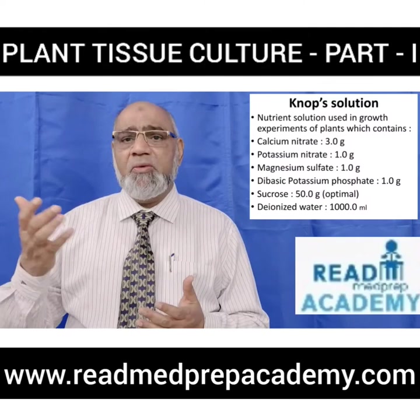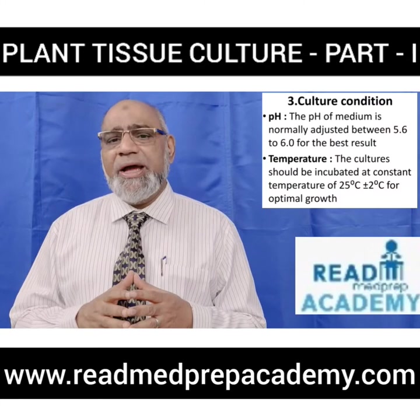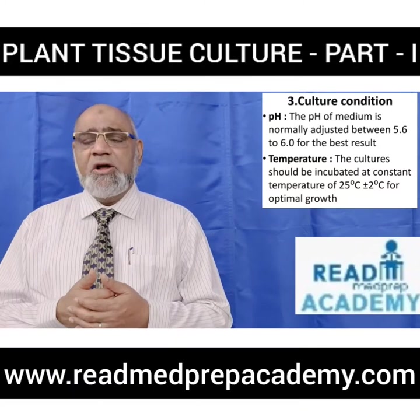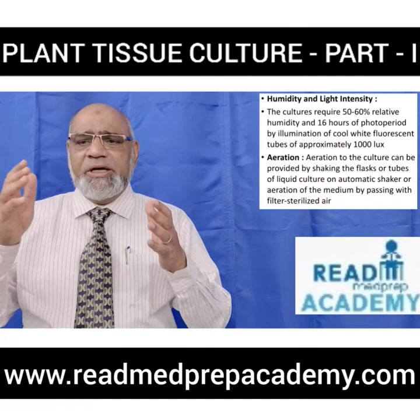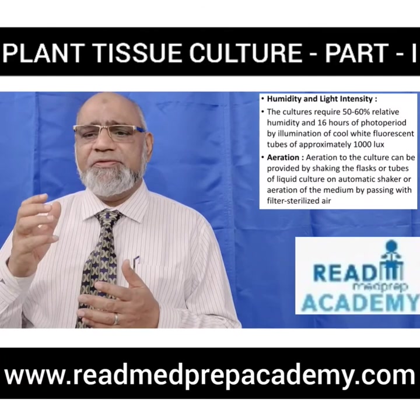Agar is a complex mucilaginous polysaccharide obtained from marine algae or seaweeds and is used as a solidifying agent in media preparation. Culture conditions required: pH of the medium is normally adjusted between 5.6 to 6.0; temperature should be 25°C ± 2°C for optimal growth; humidity and light intensity require 50–60% relative humidity and a 16-hour photoperiod using cool white fluorescent tubes of approximately 1000 lux. Aeration can be provided by shaking flasks or tubes on a rotary shaker or by passing filtered sterilized air.